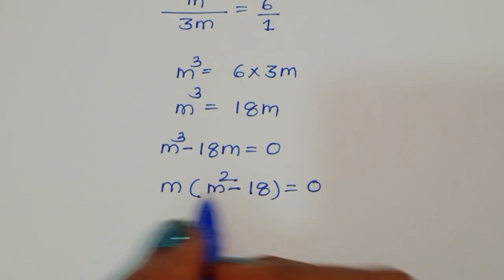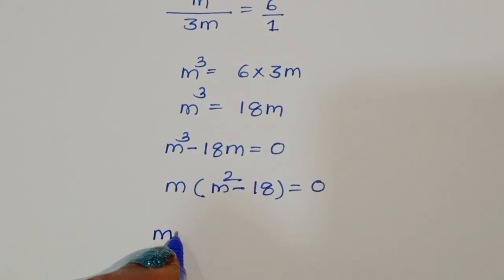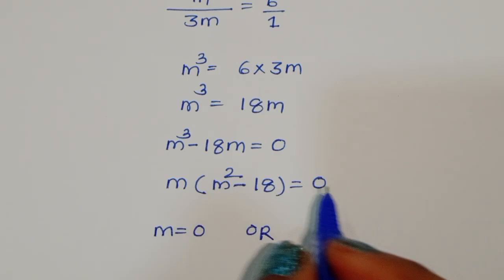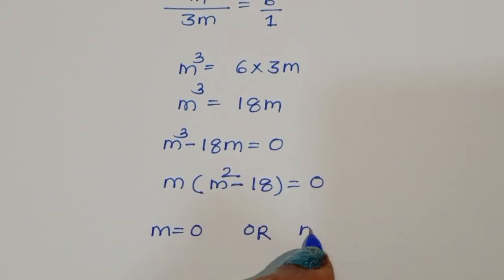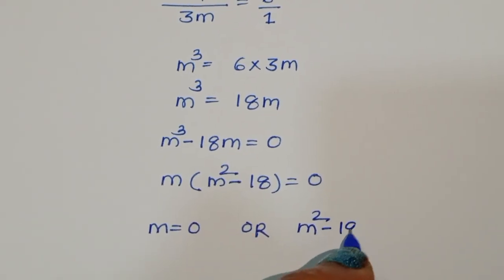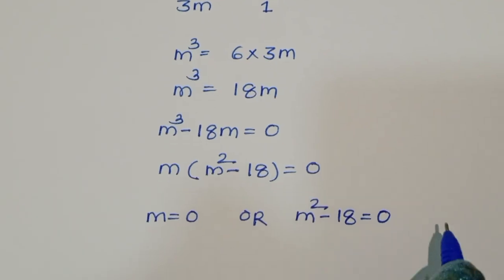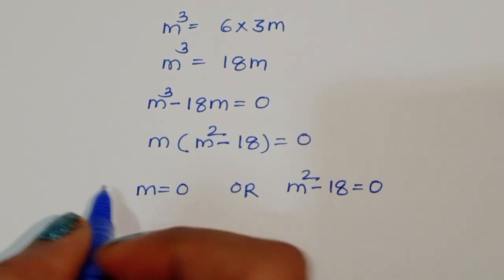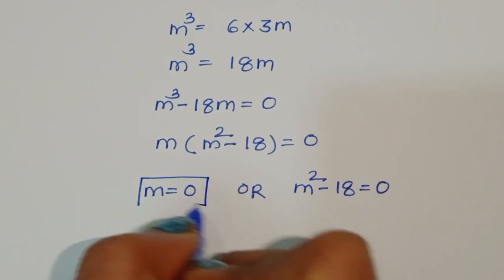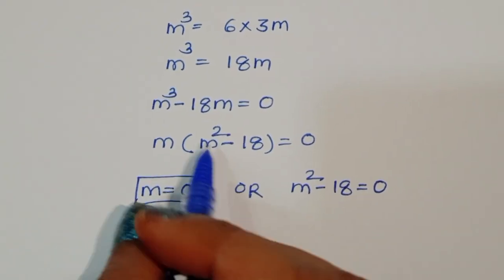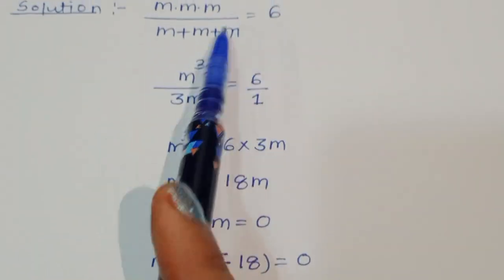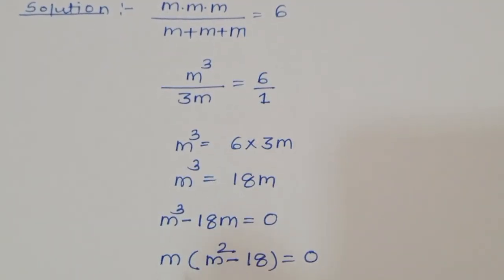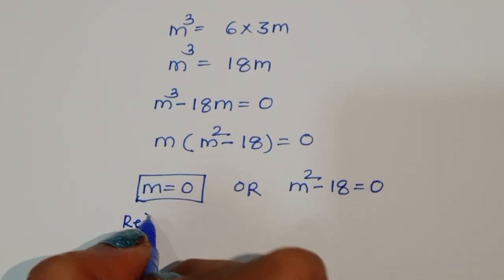We got two equations: first one is m equals 0, and the next one is m squared minus 18 equals 0. Now m equals 0 is rejected because m cannot be equal to 0, so we reject that solution.